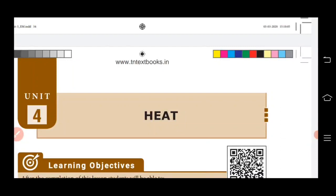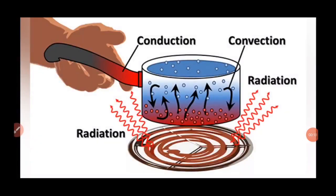Hello students, welcome to Standardize Science online class. In today's online class we are going to continue Unit 4: Heat. Our today's topic is transfer of heat. We know that if we give heat energy to any substance, it will transfer from one part of the substance to another part, taking place in different ways depending on the state of the substance. There are 3 ways of heat transfer: first is conduction, second is convection, and third is radiation. Let me explain them one by one.